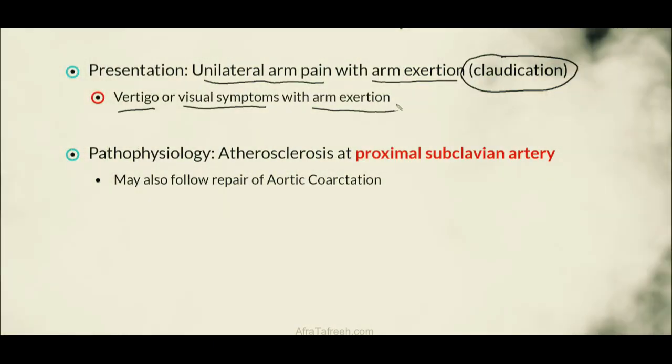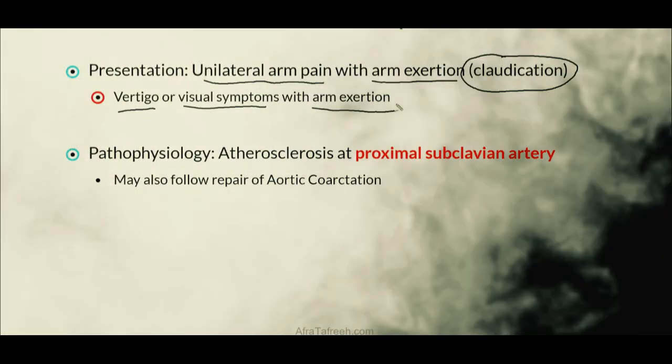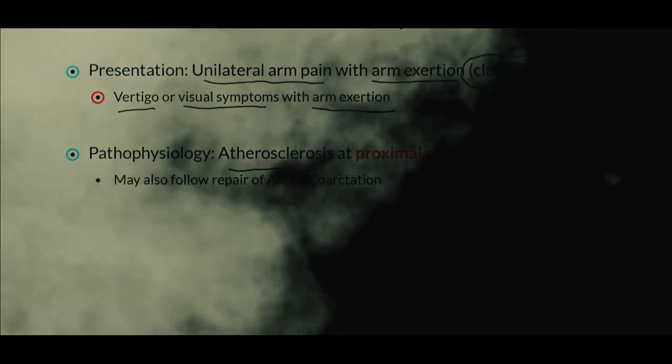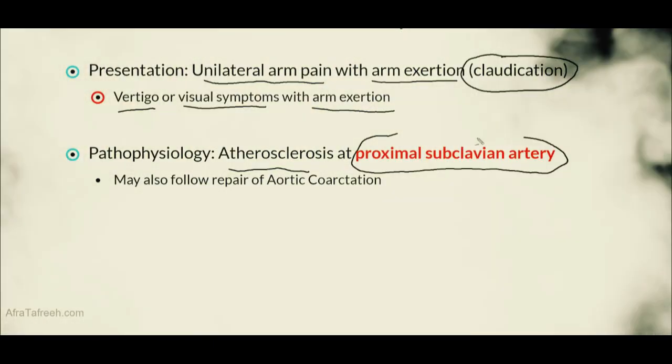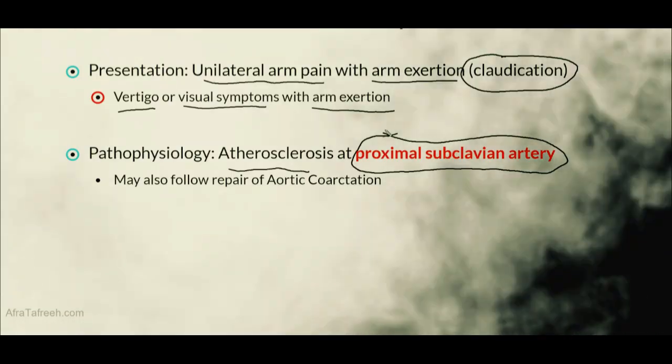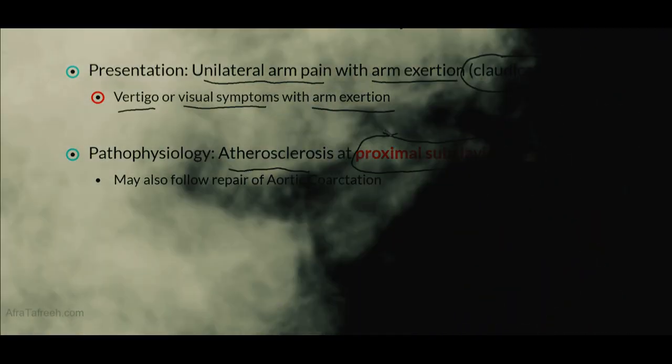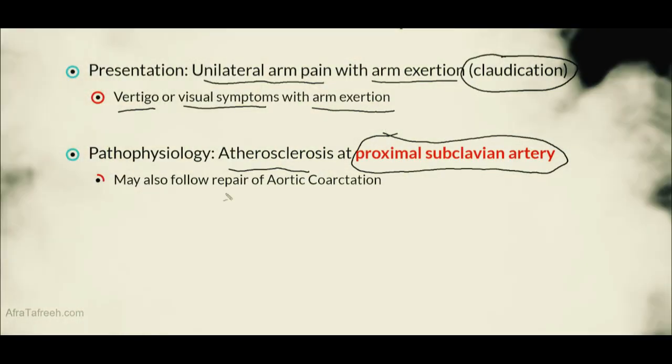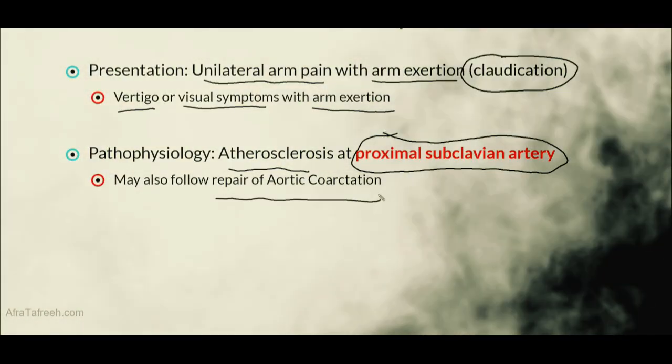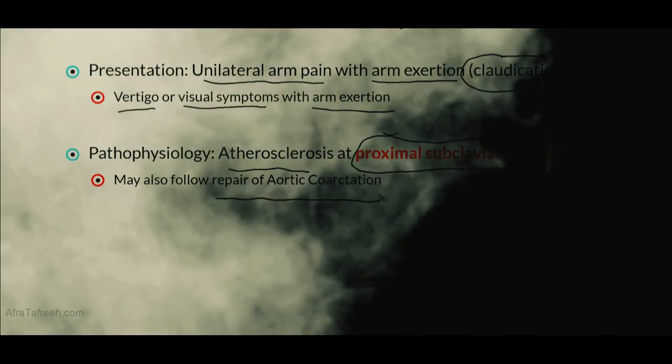The pathophysiology of subclavian steal syndrome is atherosclerosis, specifically at the proximal subclavian artery. Additionally, in select cases, subclavian steal syndrome may also follow repair of an aortic coarctation.